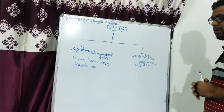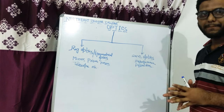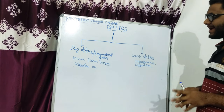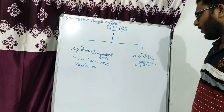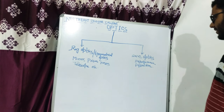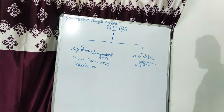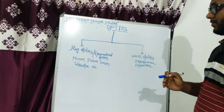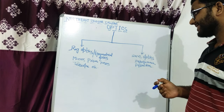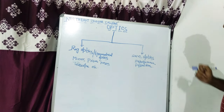Now let us talk about Optics. Basically, optics has two branches: one is ray optics, also called geometrical optics, and the other is wave optics.